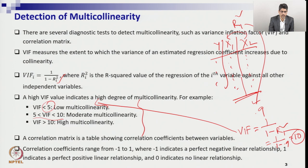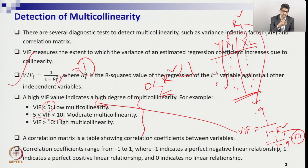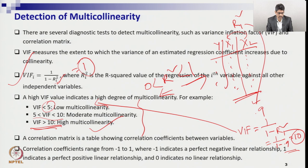If the VIF is between 5 and 10, it is considered moderate multicollinearity and should be handled. If it is above 10, it is highly multicollinear. These are not absolute benchmarks, but generally followed rules. If VIF is less than 5, people say it is okay to carry forward the regression analysis. This is the general concept of VIF through which you measure the level of multicollinearity.